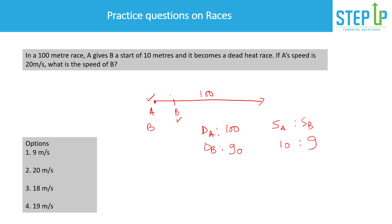If A's speed is given as 20 meters per second, we know the ratio is 10:9. Since 10 corresponds to 20, the multiplying factor is 2. Therefore B's speed is 9 × 2 = 18 meters per second. So the answer is 18 meters per second. That concludes our practice on races — we can now confidently tackle any races problem.